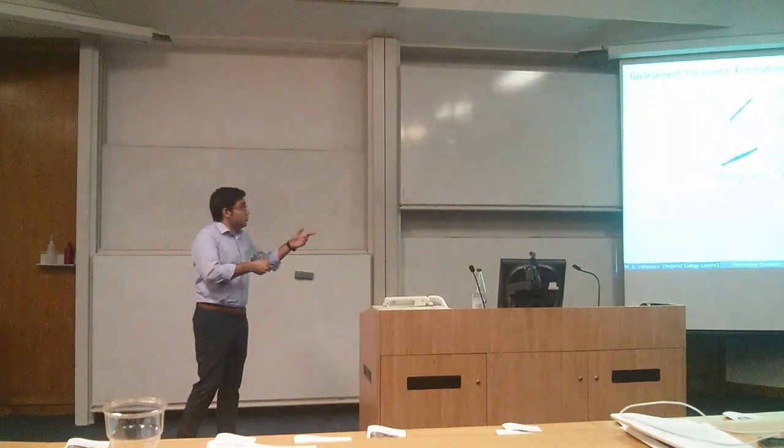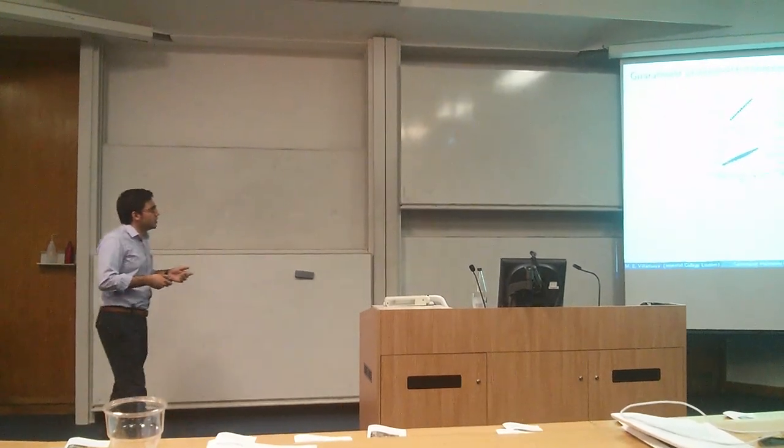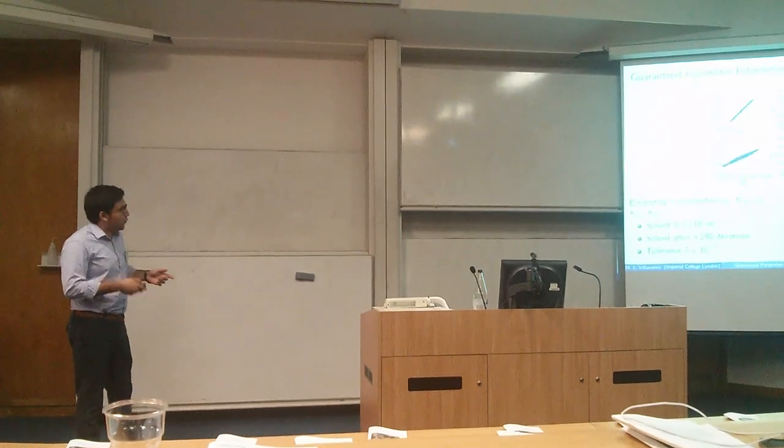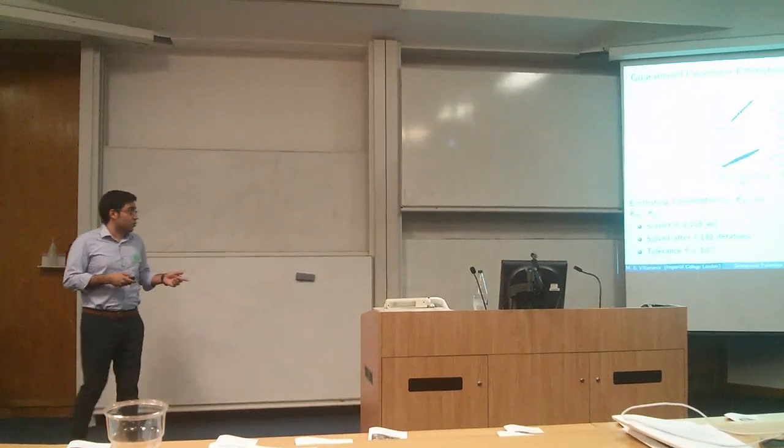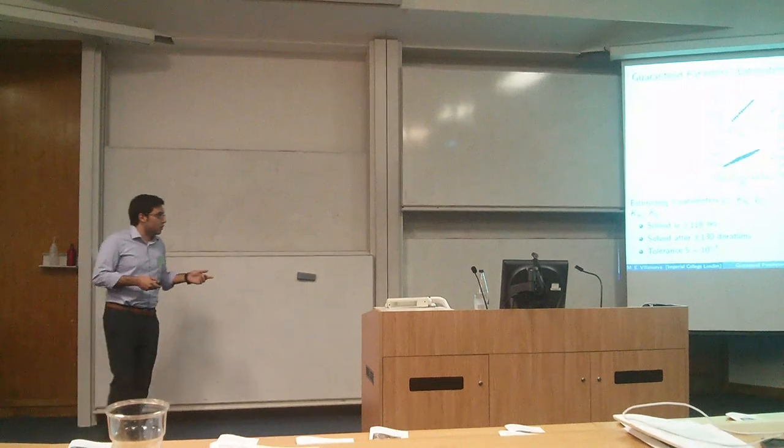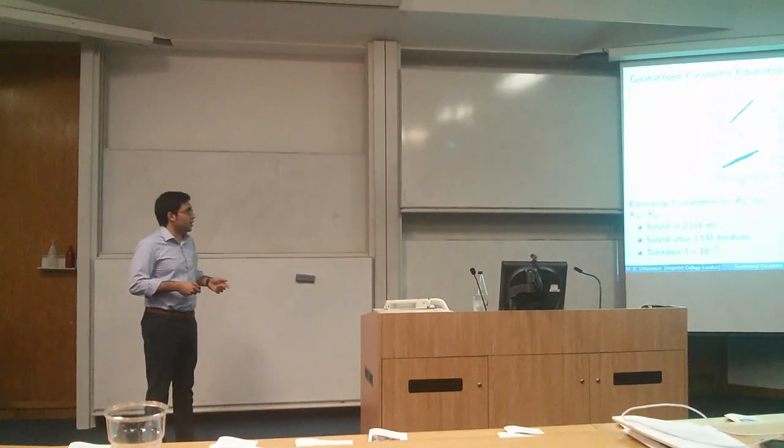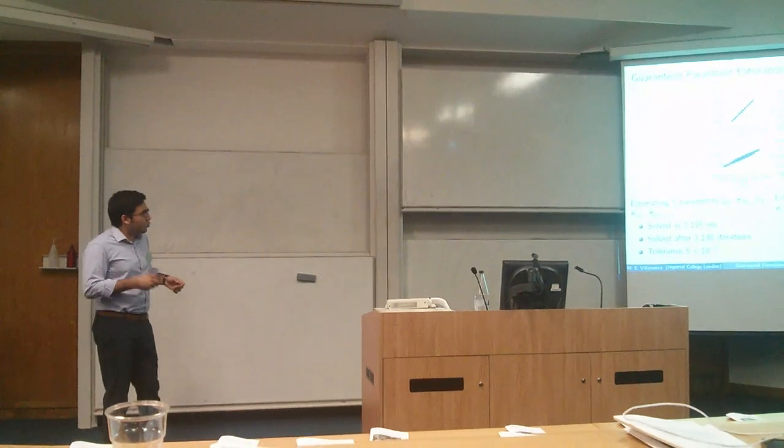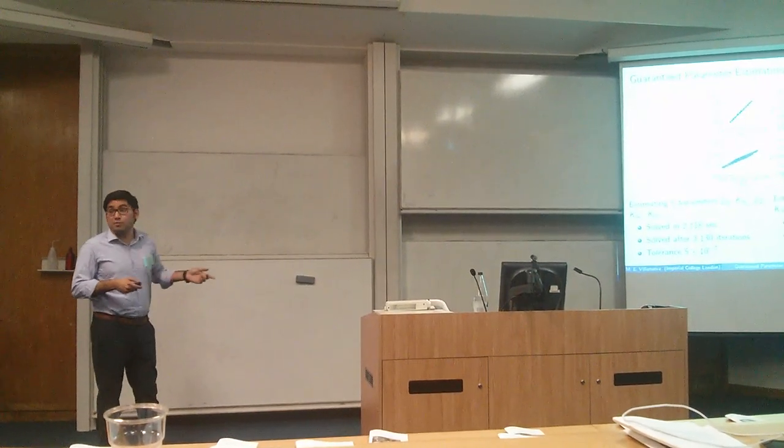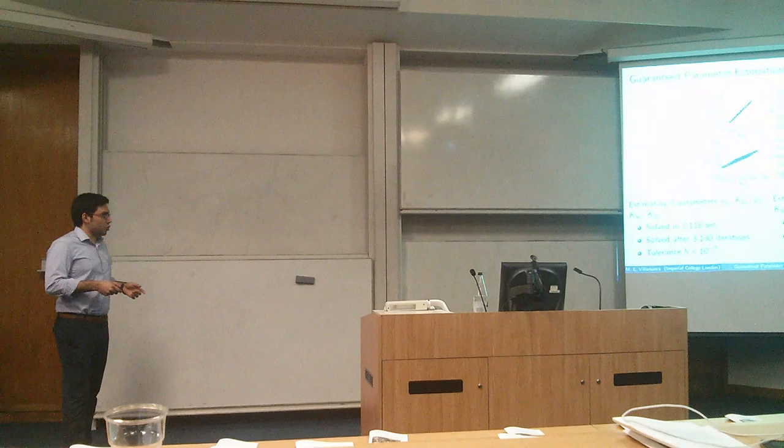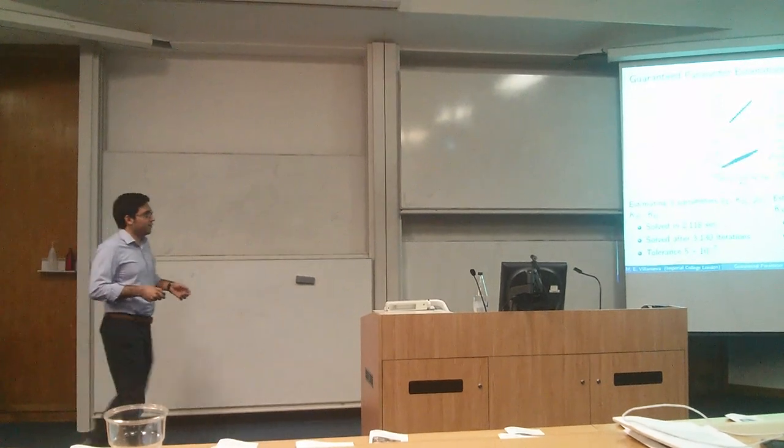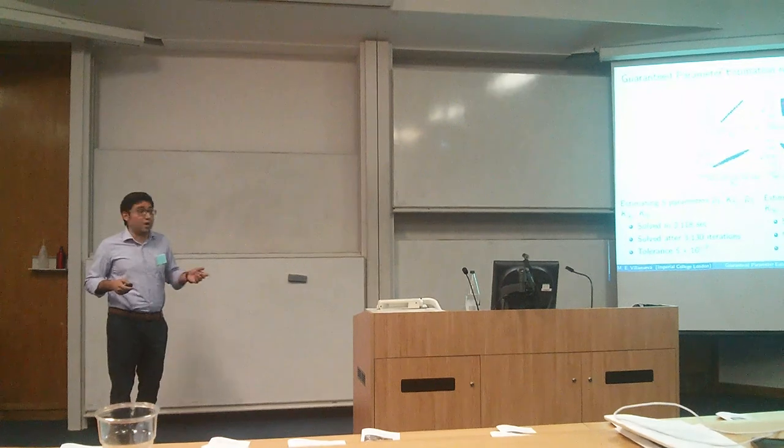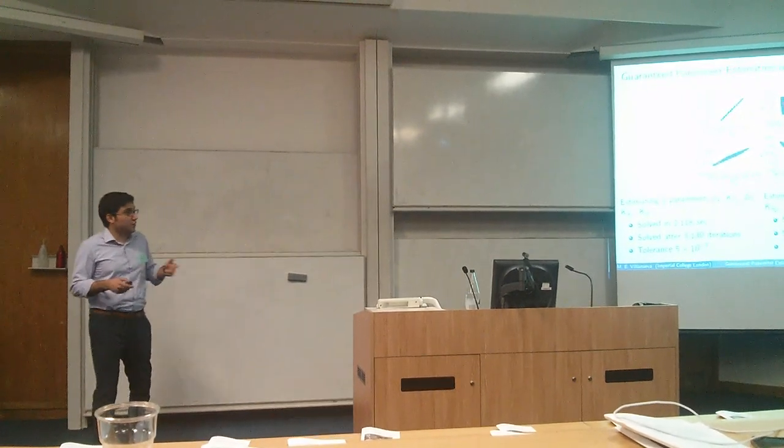I would like to show you these results for the parameter estimations. We first estimated five parameters. We did this in under an hour to a tolerance of 5 to the minus 7. And we also solved it for seven parameters to a tolerance of 5 to the minus 11. And this is in about five hours. A bit more than five and a half hours.